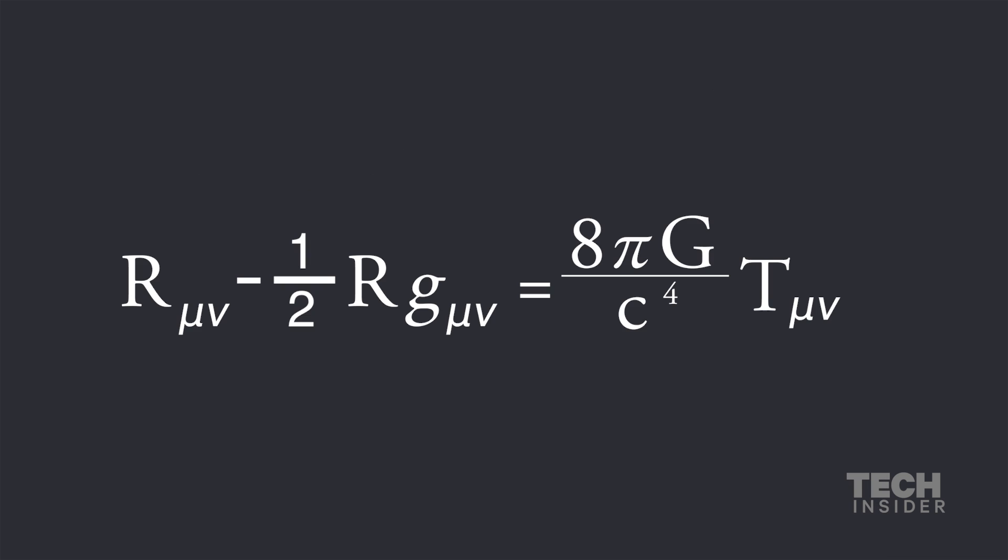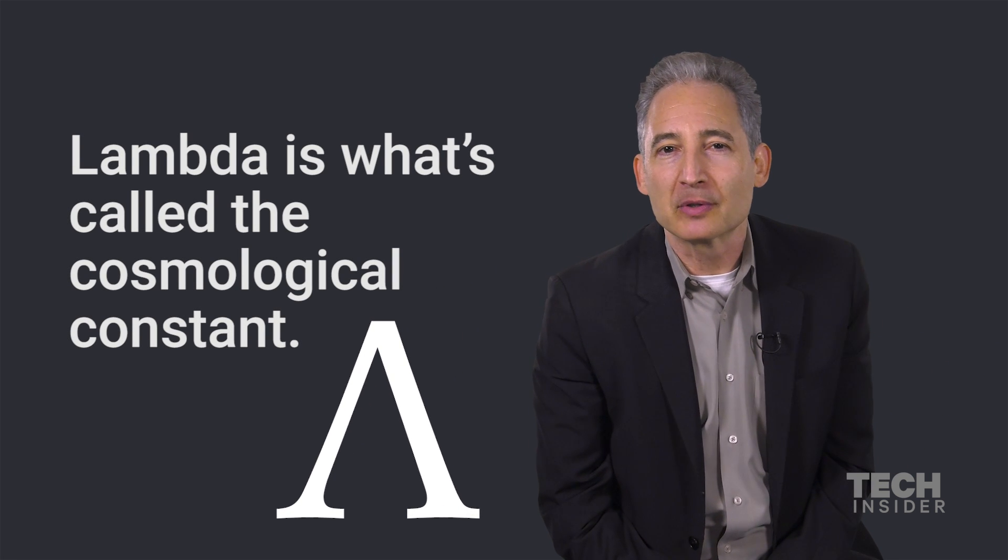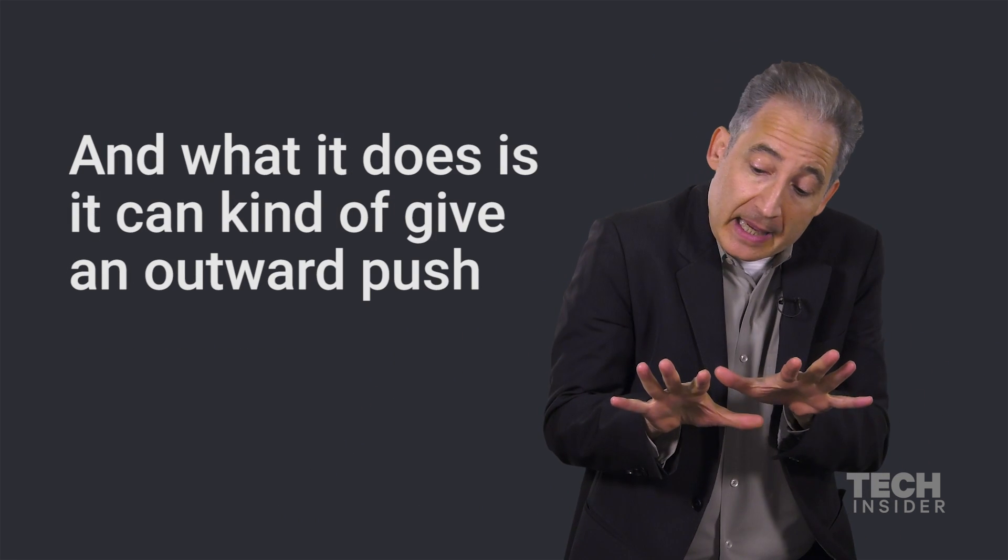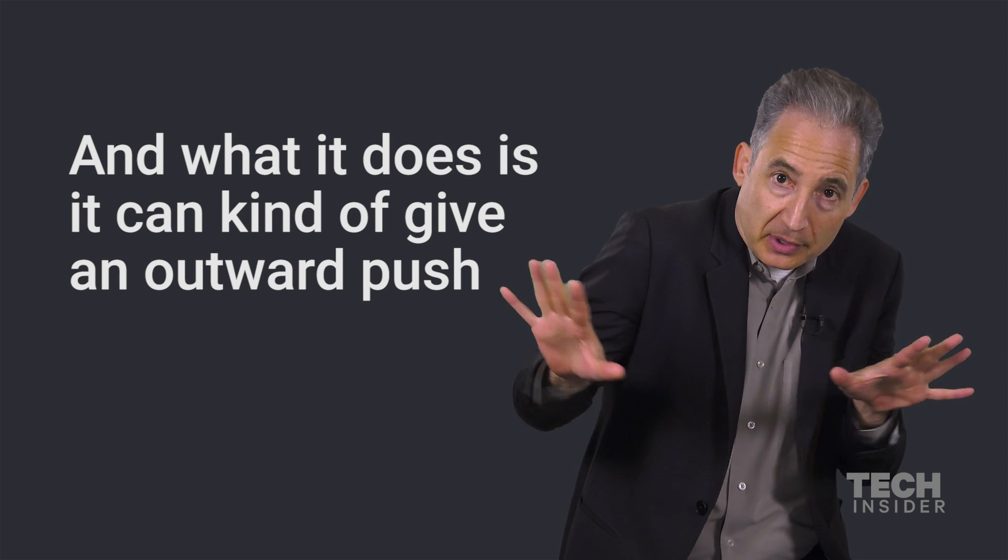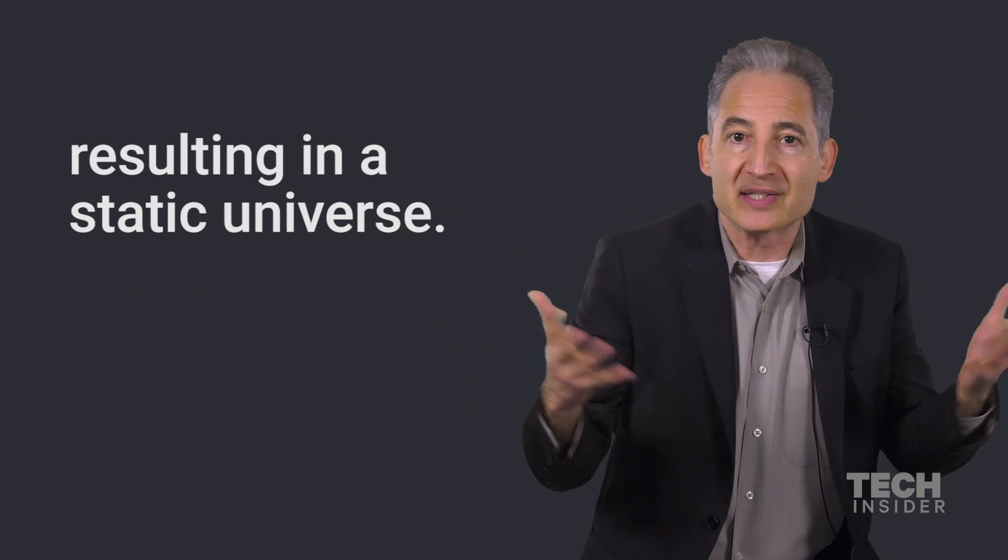He went back to the equations, put in one more term on the left-hand side, he put a lambda g mu nu. Lambda is what's called the cosmological constant. He called it the cosmological member, and what it does is it can give an outward push that can stabilize the inward pull of gravity, resulting in a static universe, and then Einstein was happy, right?